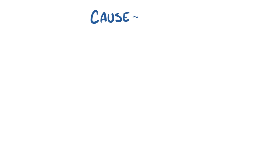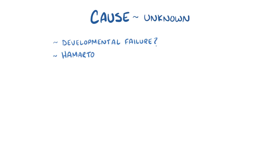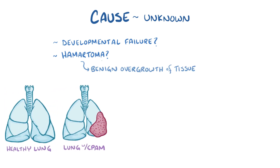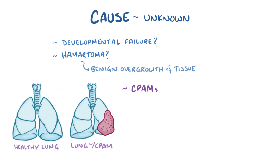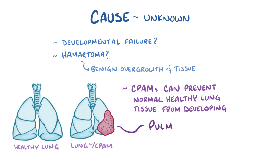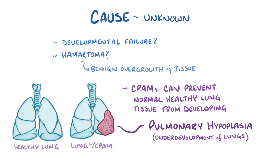The cause of CPAMs isn't known. It isn't even known whether they're a developmental failure or if they're a type of hamartoma, which is a benign overgrowth of tissue. Sometimes the growing CPAM can prevent normal healthy lung tissue from developing, causing pulmonary hypoplasia, which is underdevelopment of the lungs.